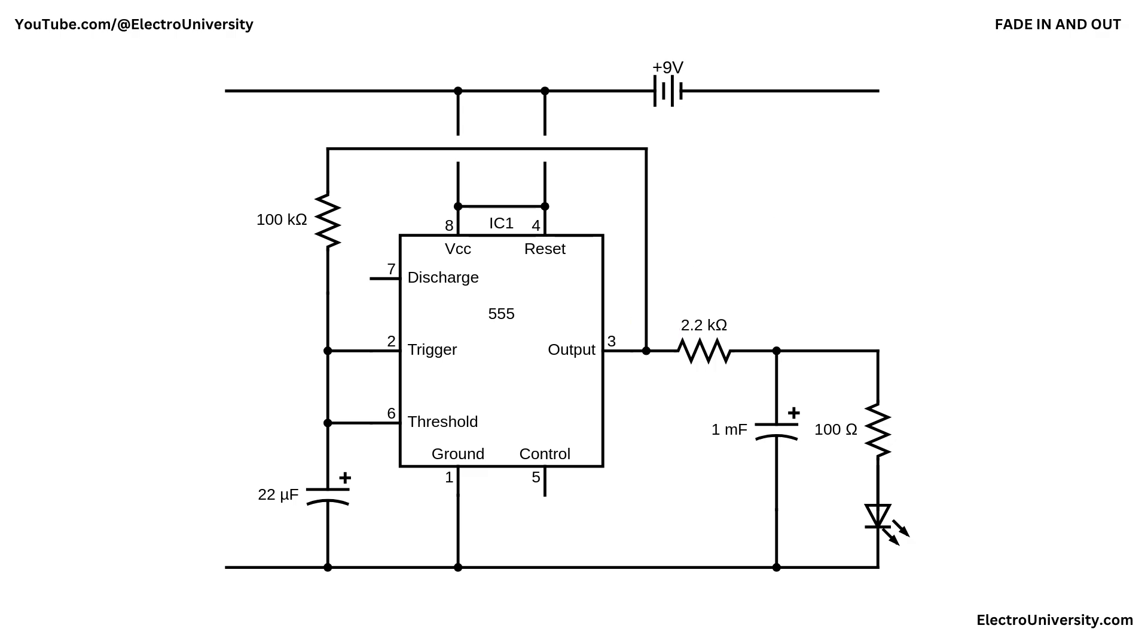The timing components, a 100-kilo-ohm resistor and a 22-microfarad capacitor, connected to pin 6 or threshold and pin 2 or trigger, determine the frequency of the oscillation. The capacitor charges and discharges through the resistor, creating a voltage cycle that makes the 555 output go high and low periodically.